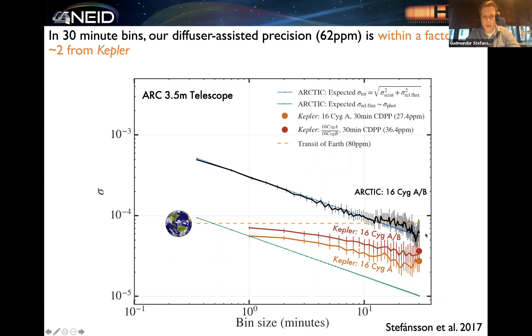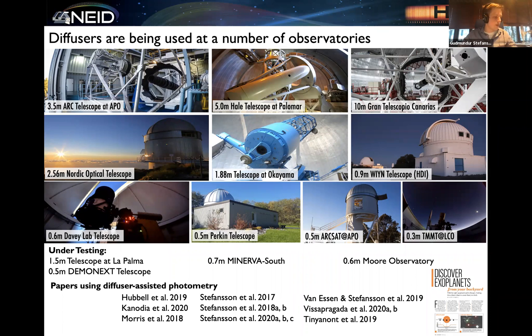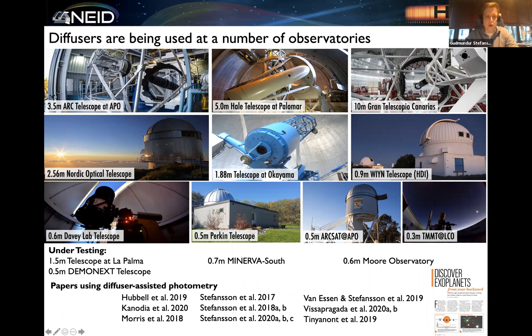Because diffusers are relatively inexpensive devices — a two-by-two inch diffuser similar to this one is only around $500 or so — we've been working with a number of different groups to install and commission diffusers on different telescopes. We've been using in particular the diffuser on the 3.5-meter telescope at Apache Point to follow up a number of different K2 and TESS targets to help confirm and characterize these exciting planets with high precision. Diffusers are also being considered for other different telescopes as well.